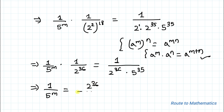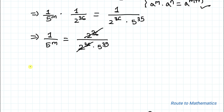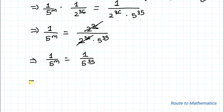The 2 to the power 36 terms cancel out. This implies 1 by 5 to the power m equals 1 by 5 to the power 35. We can rewrite this as (1/5) to the power m equals (1/5) to the power 35.